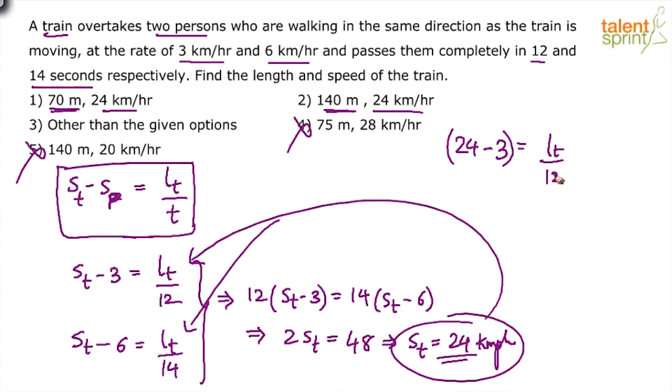So basically, the length is in meters, time is in seconds here, speed is in kilometers per hour. So you have to convert the speed from kilometers per hour to meters per second. How do you do? Multiply by 5 by 18.